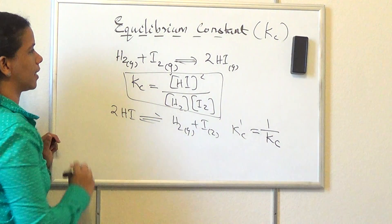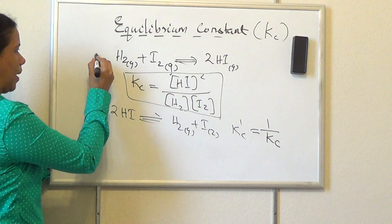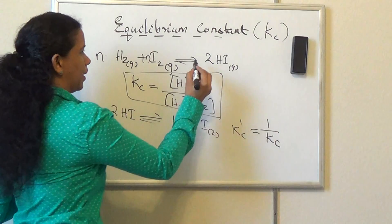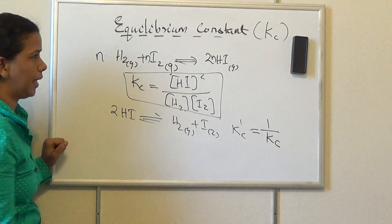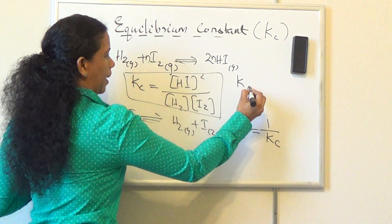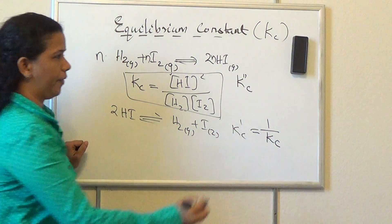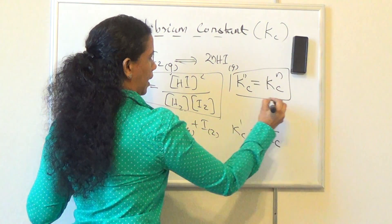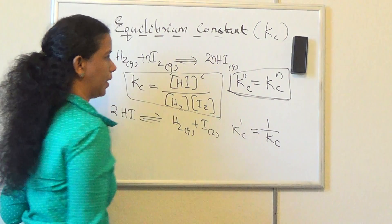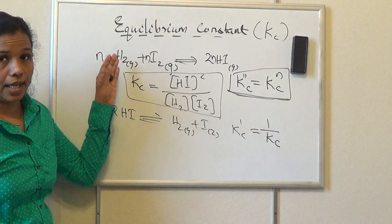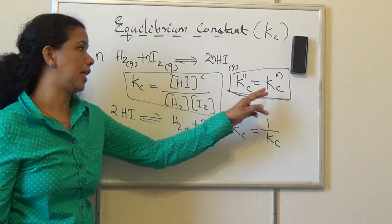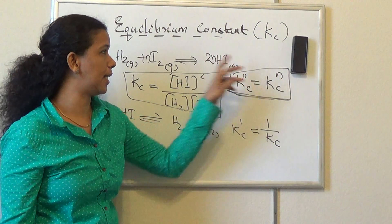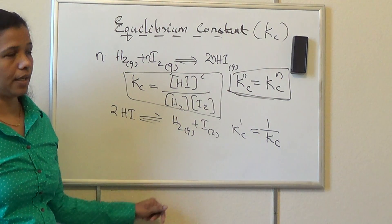If we multiply a reaction by a number N — so N moles of H2 plus N moles of I2 gives 2N moles of HI — then the new equilibrium constant K''c equals Kc raised to the power N, where N is the multiplying factor.